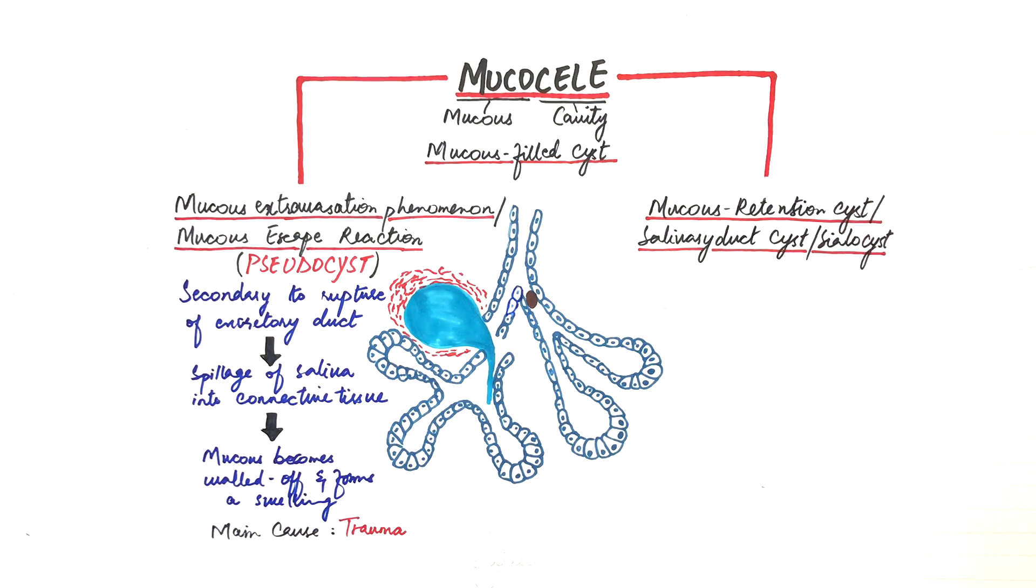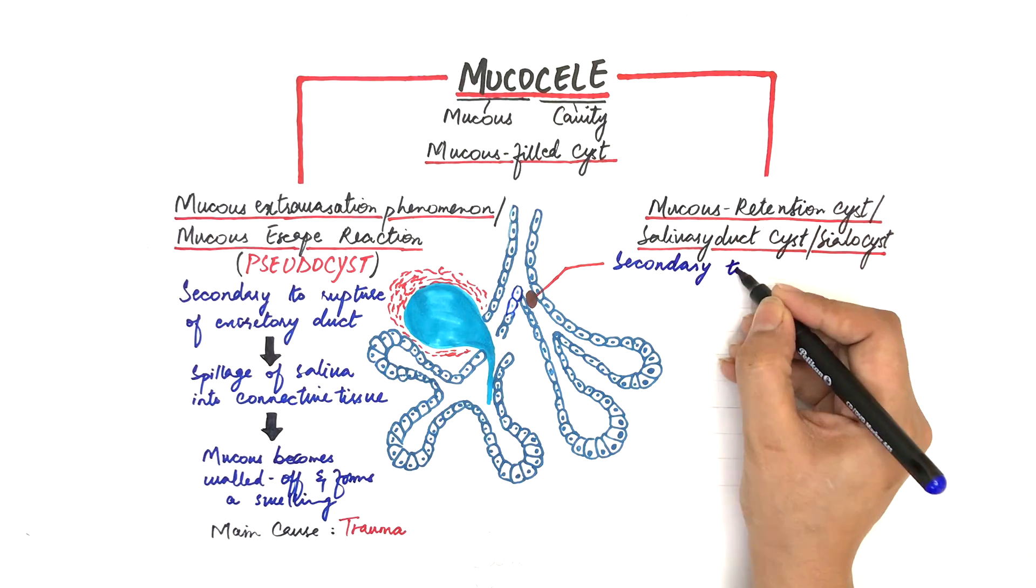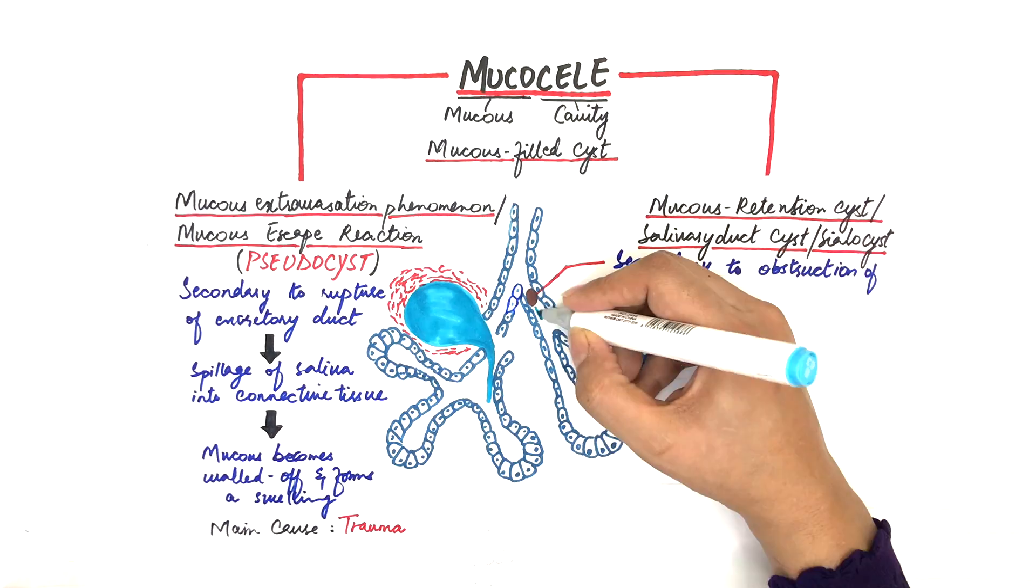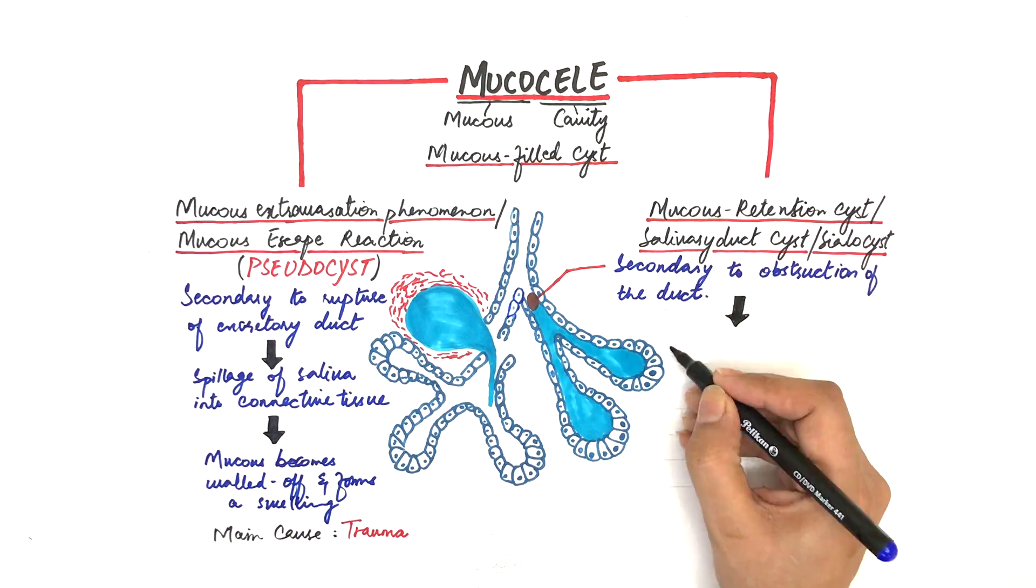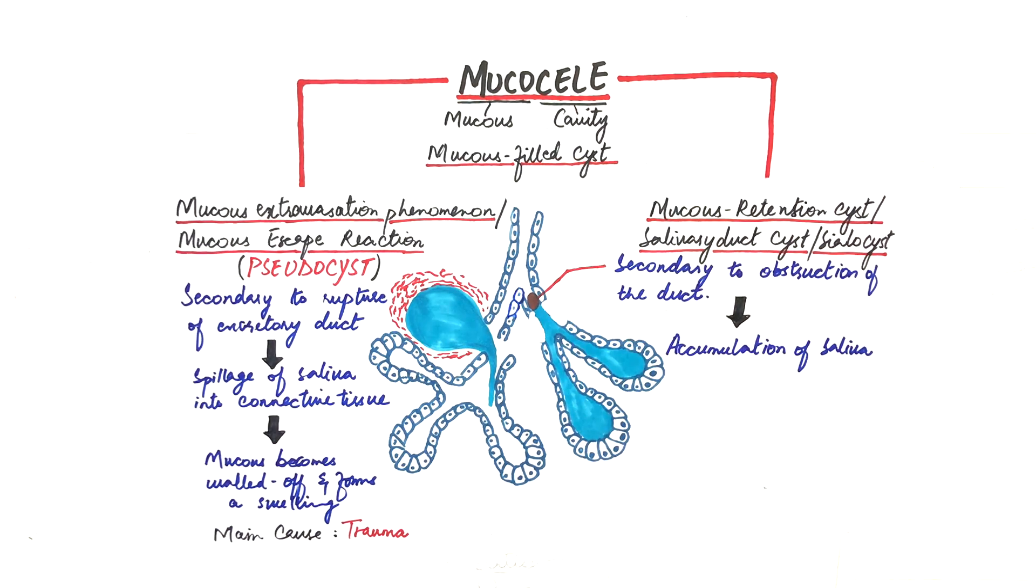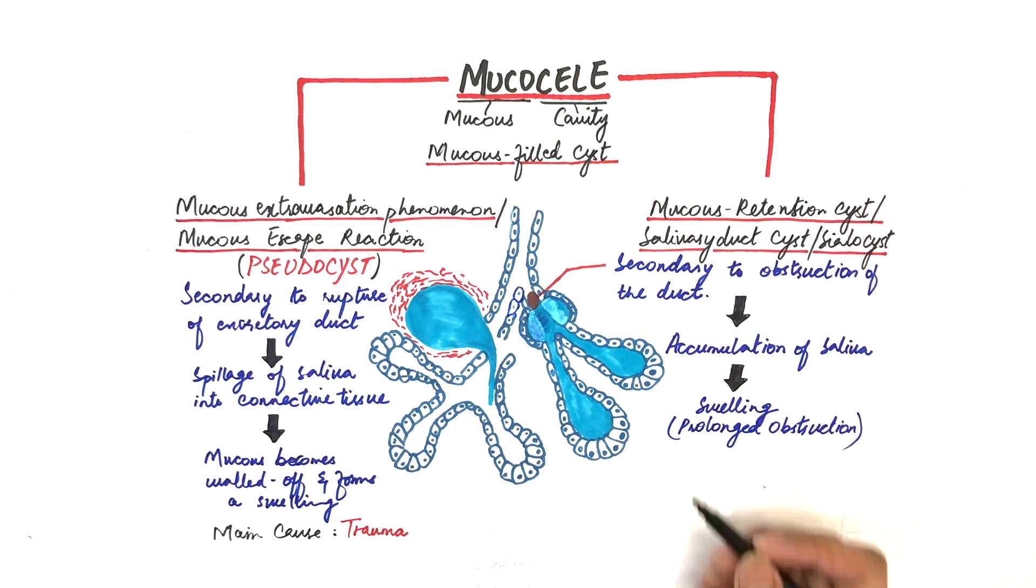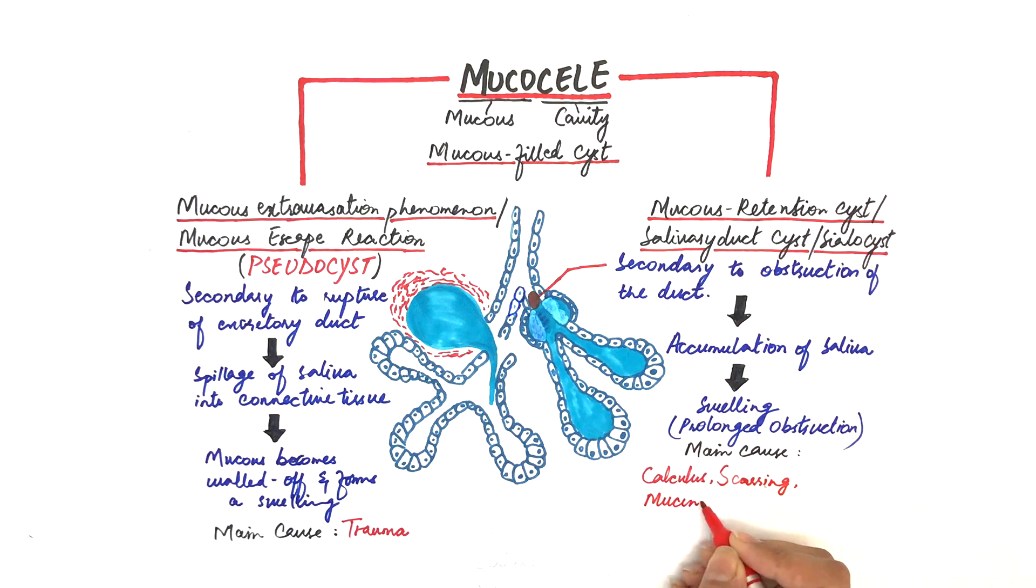On the other hand, mucus retention cysts are formed secondary to obstruction of the duct, which leads to accumulation of saliva either within the gland or within its duct. Prolonged obstructions within these glands or ducts causes further fluid accumulation and results in swelling. This salivary obstruction leading to development of a cyst might result from calculus formation, scarring and obstruction from mucin plugs. Unlike mucus extravasation phenomenon, mucus retention cyst is a true cyst, meaning that it's lined up by a layer of salivary epithelium.